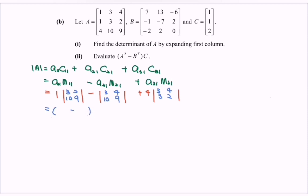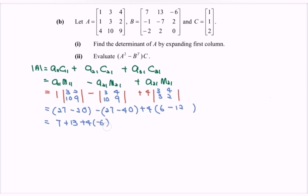Computing: we get 27 minus 20, then negative of 27 minus 40, then positive 4 times bracket 6 minus 12. So we have 7, minus bracket negative 13, plus 4 times bracket negative 6. That gives 20 minus 24. So the determinant of A equals negative 4.